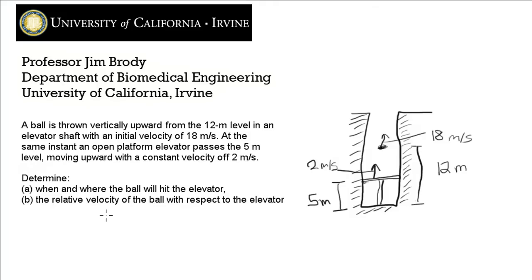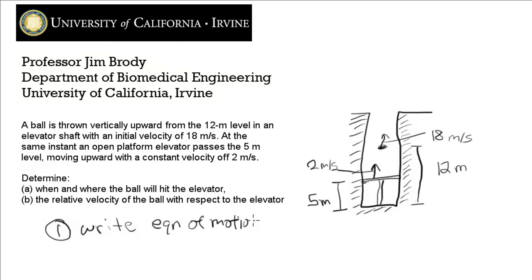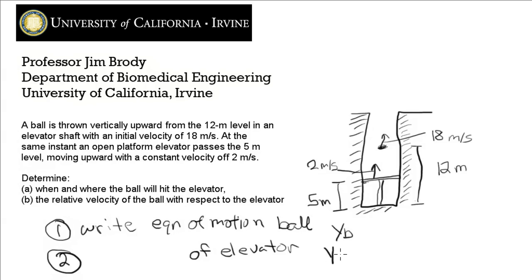How are we going to approach this problem? Two steps to set this up: first, write the equation of motion for the ball, call that y sub b. Second, write the equation of motion of the elevator, call that y sub e. Then we'll set y sub b and y sub e equal to one another and solve for the time — that tells us when the ball hits. Plugging back in gives us where.